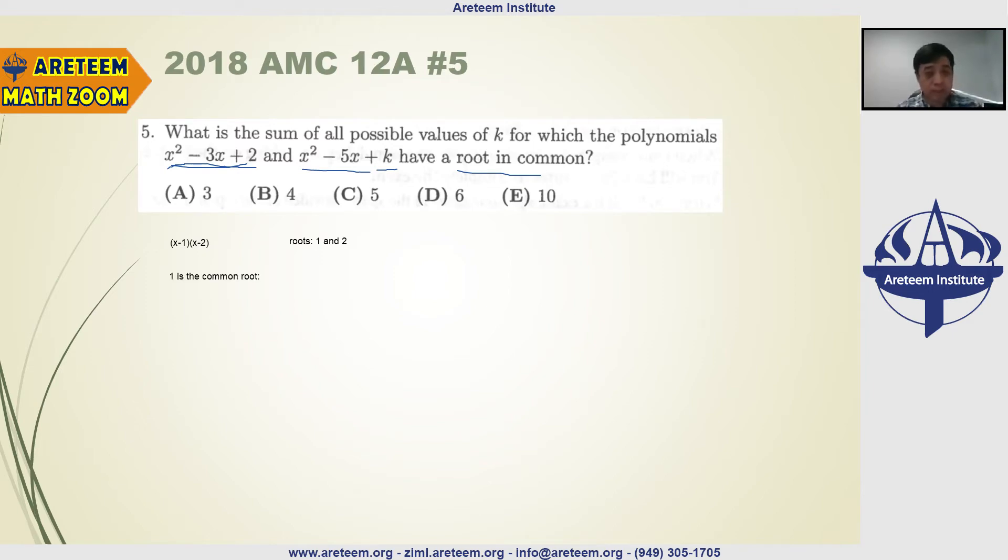If 1 is a common root, then the second polynomial, you plug in 1, it should be 0, right? So then we calculate that 1 minus 5 plus k equals 0. So in this case, k has to be 4.